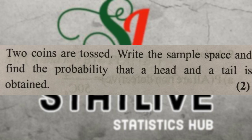Let's do this again. If you have a question: find the probability that head and tail is obtained when two coins are tossed. The sample space has 4 elements. So the probability is 2 by 4.